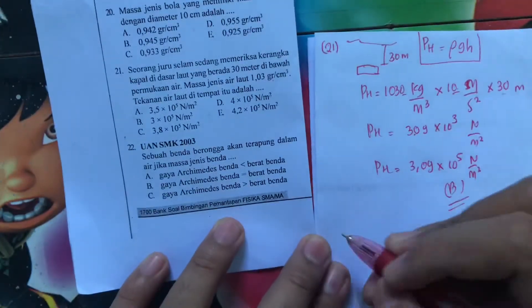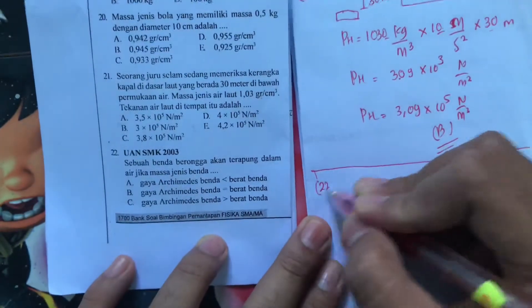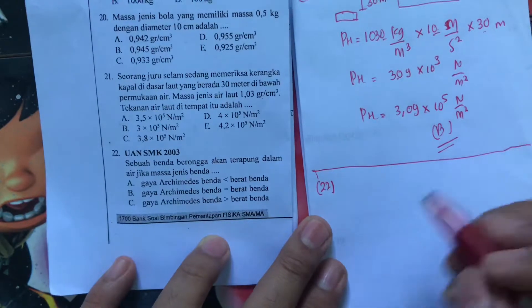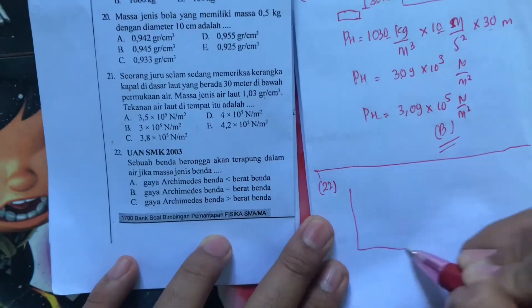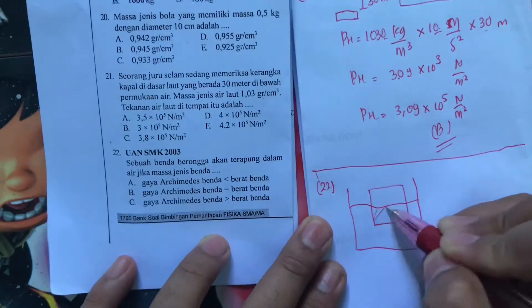Next, untuk soal nomor 22. Sebuah benda berongga akan terapung dalam air jika masa jenis benda. Nah, ini konsep hukum Archimedes kan? Sebuah benda mengapung, berarti kan mengapung ilustrasinya kira-kira seperti ini.